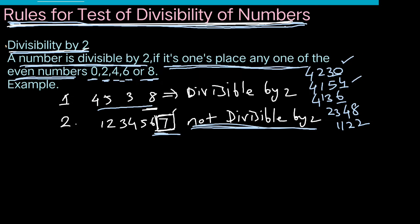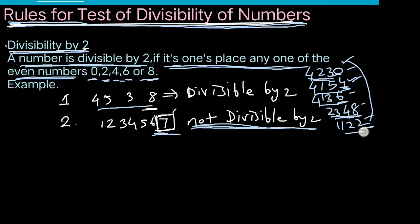For example, the last digit is 0, last digit is 4, last digit is 6, last digit is 8, last digit is 2 — so the last digit is 2. So this number is divisible by 2. The 2 table is divisible by 2; remainder is 0.